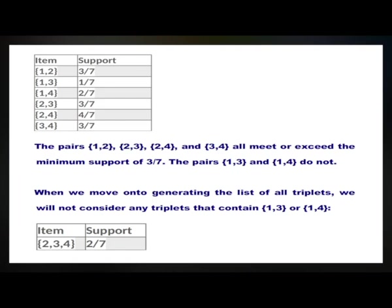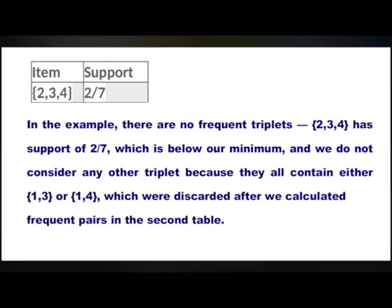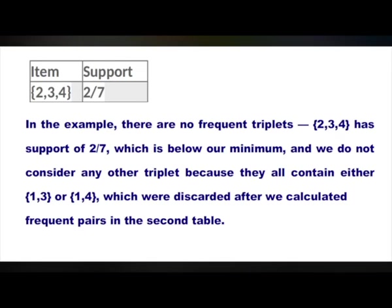Look at this table. The triplet items are {2, 3} and {2, 3, 4}. This set has support of 2 out of 7. In this example, there are no frequent triplets. The set {2, 3, 4} has support of 2 out of 7, which is below our minimum. So we do not consider any other triplet, because they all contain either the set {1, 3} or the set {1, 4}, which were discarded after we calculated the frequent pairs in the second table.